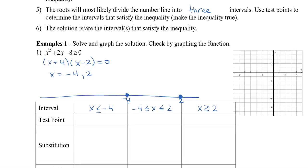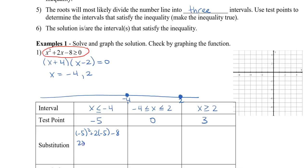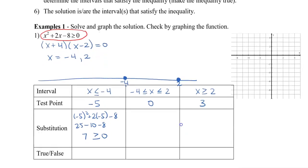Now I want to pick a test point to see if it's going to satisfy the inequality. A number that's less than negative 4 is going to be negative 5. A number between negative 4 and 2, I want to choose 0. A number bigger than 2, I'm going to choose 3. I'm going to substitute these into my original question. So I have negative 5 squared plus 2 times negative 5 minus 8: that's 25 minus 10 minus 8, which is 7. Is 7 greater or equal to 0? In this case, it is true.